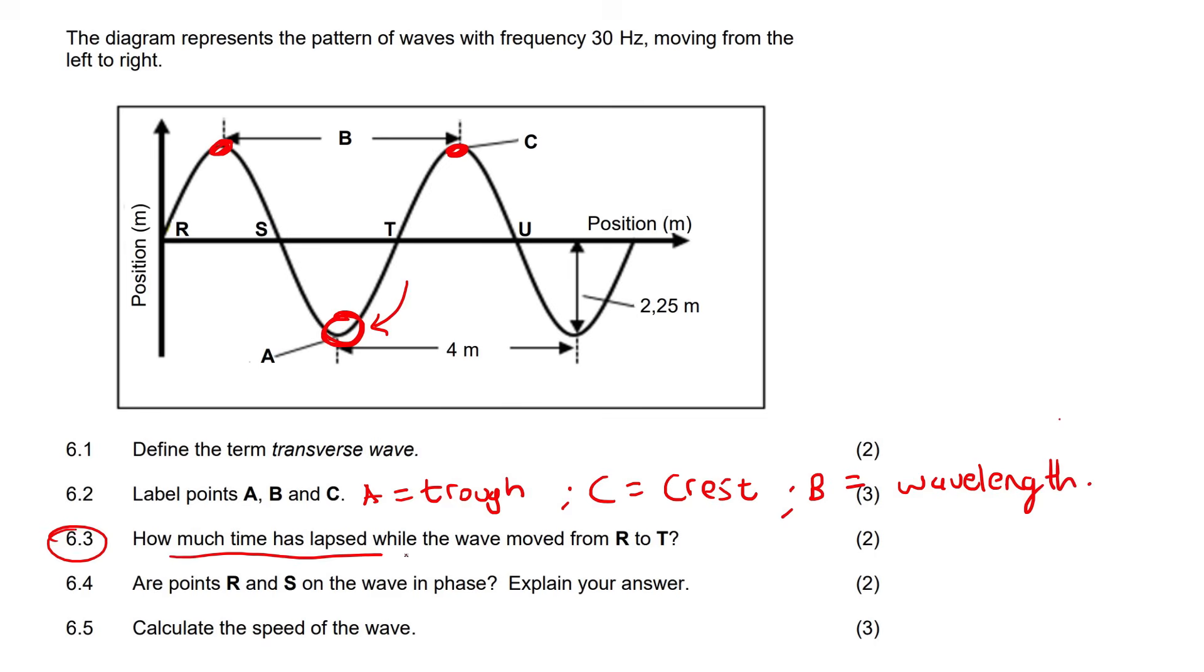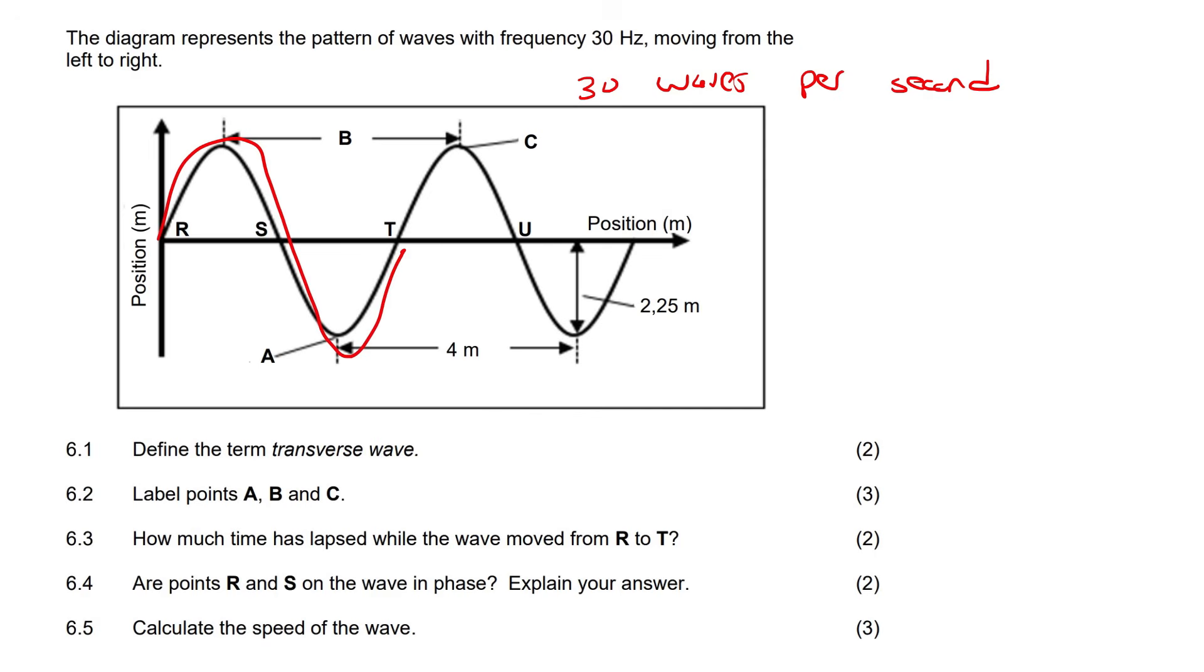This question: How much time has elapsed while the wave moved from R to T? Can you see that R to T is one wave? We know that the frequency is 30 waves per second. In one second, there are 30 waves coming past. But what we want to know is how long does it take for one wave? Because if you go from R to T, that is one wave. Remember that frequency equals 1 over period, and period equals 1 over frequency. What we need to calculate is the period, which is the number of seconds for one wave. So T = 1/30, and if you work that out, you'll get 0.03 seconds.